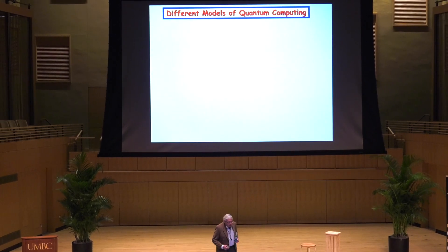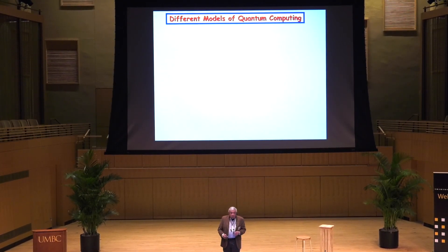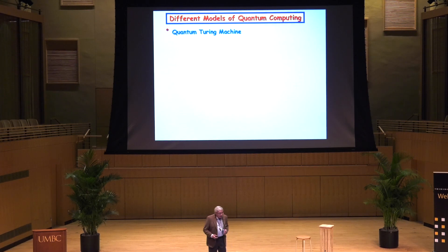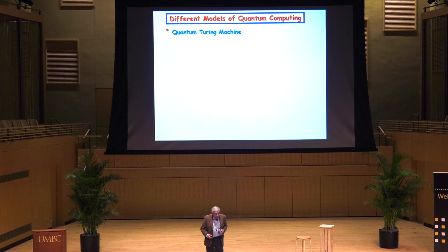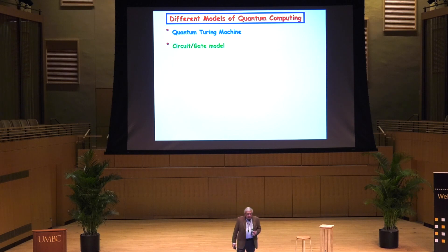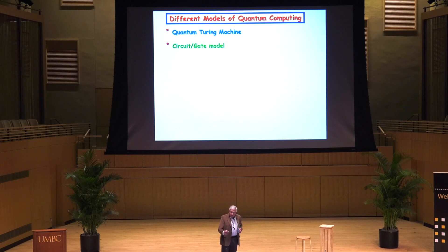Let me begin by talking about the different models of quantum computing, and there are quite a few out there. There's the quantum Turing machine — this is the first quantum model, created by David Deutsch, a famous pioneer in quantum computing and a student of John Wheeler. It was later found that the clock of this Turing machine would unfortunately entangle with the data on the machine, and there were different technical problems. The next model was the circuit gate model, which Andrew just talked about, and we must be very careful that the size of the gates does not grow faster than polynomial time.